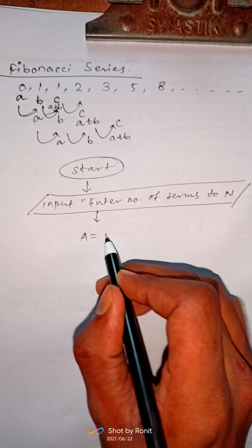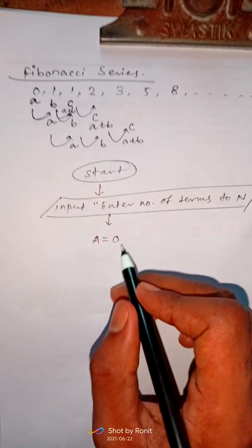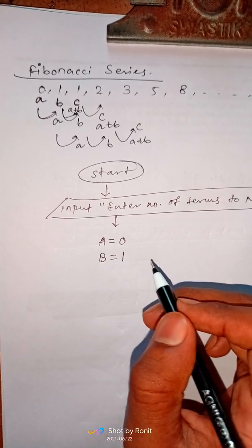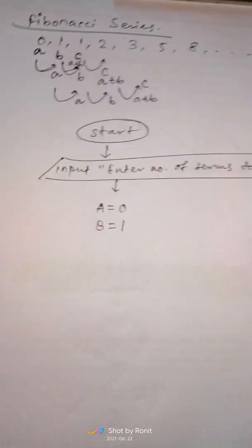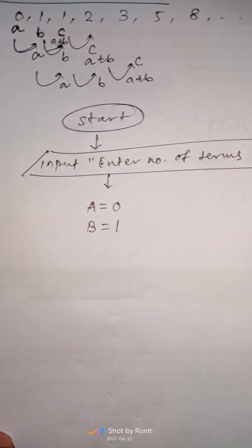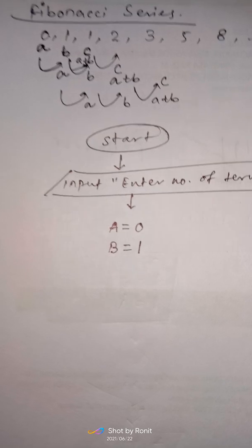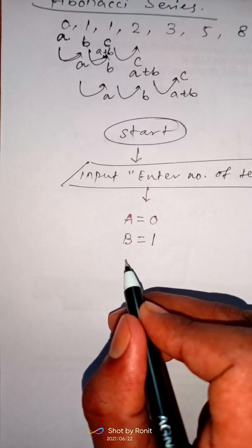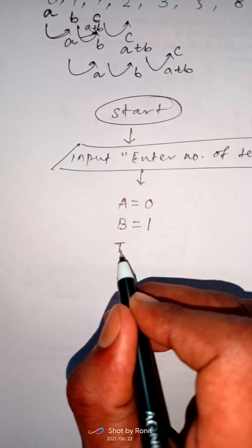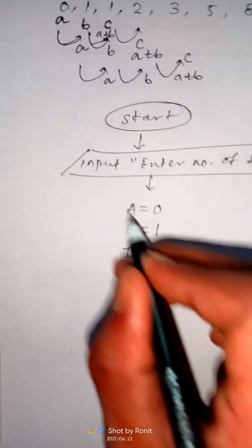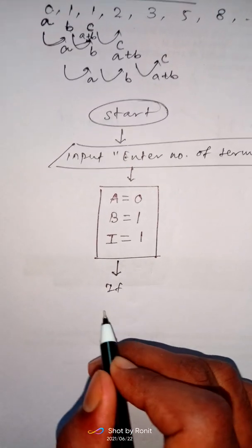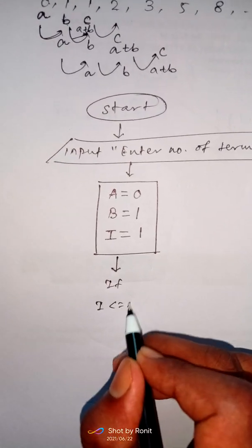We set the first term a=0 (it is fixed) and the second term b=1 (also fixed). Since we are moving to n terms, we need a counter variable. Let i = 1.